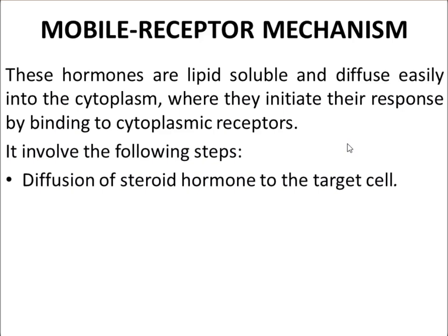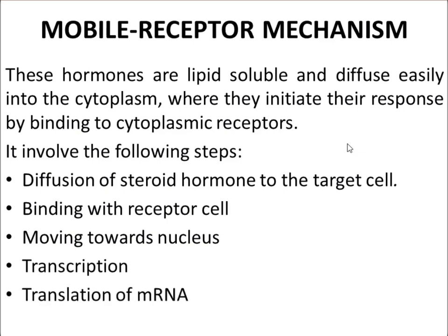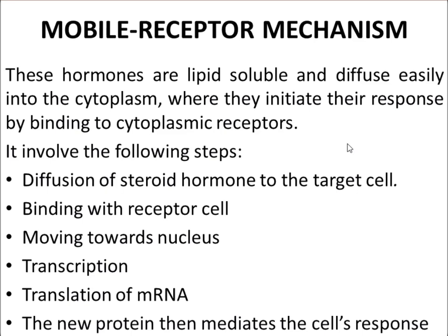The steps of the mobile receptor mechanism: steroid hormones, which are lipid soluble, diffuse into the target cells and bind with receptor proteins. The hormone-receptor complex actively moves into the nucleus, where it initiates transcription — double-stranded DNA is converted to single-stranded mRNA. The mRNA then leaves the nucleus, enters the cytoplasm, where translation occurs. The newly formed proteins mediate the cell response.